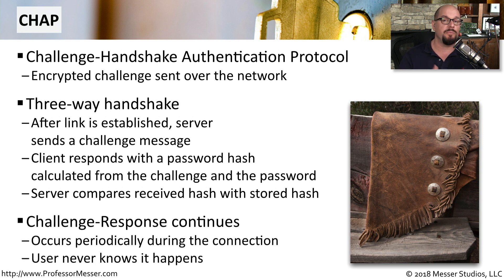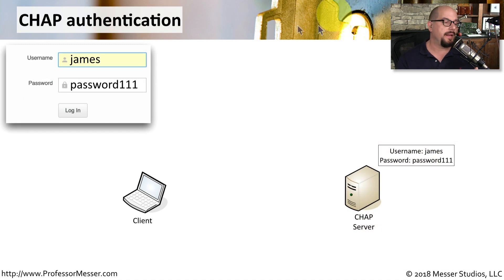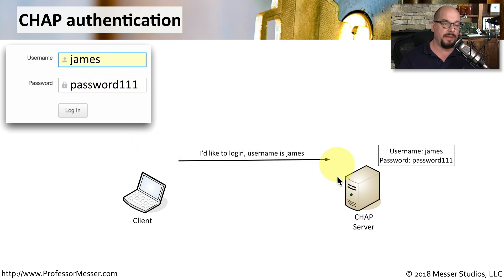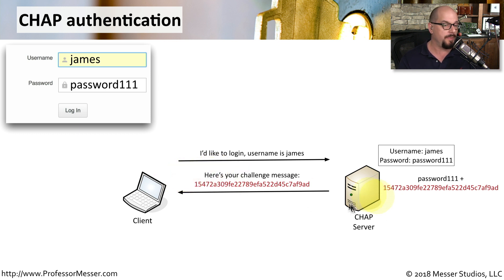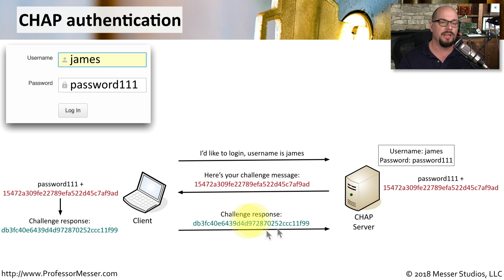This same challenge response may continue multiple times while these devices are connected. This all happens behind the scenes, and the user never even knows it's occurring. Here's the CHAP authentication. We're going to use the same username, James, and the same password of 111. The client sends a message to the CHAP server saying it would like to log in, but only sends username information — the username is James. The CHAP server has the username and password stored in its local database and creates a specialized challenge message that it sends back to the client. The client combines the challenge message with the password and sends a specialized hash in response to the CHAP server.